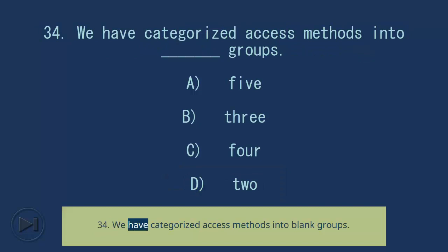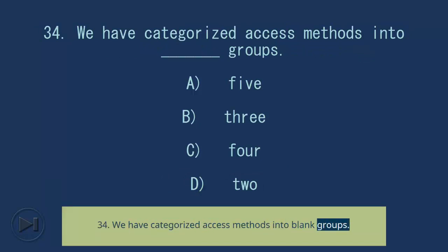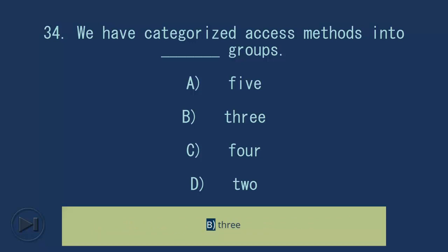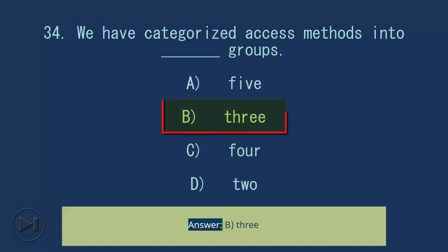Question 34: We have categorized access methods into blank groups. A) 5, B) 3, C) 4, D) 2. Answer: B) 3.